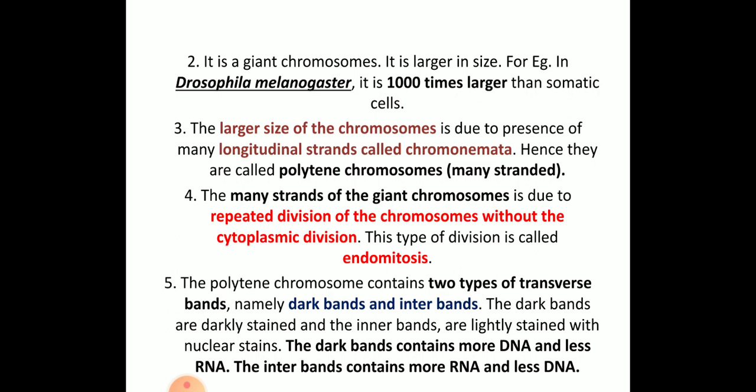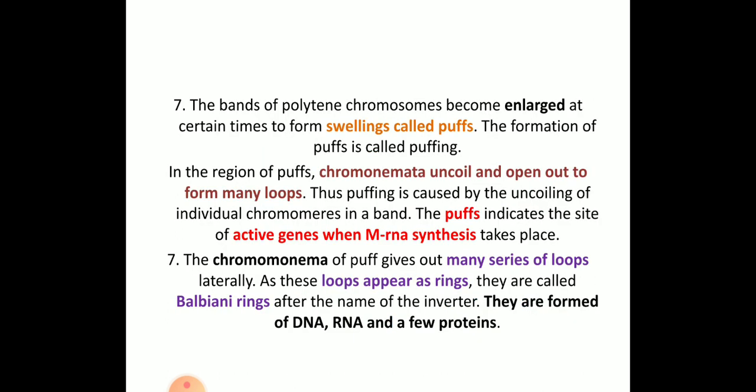Dark bands are darker in appearance, while inter-bands are less stained and not dark in nature. Dark bands contain more DNA and less RNA, whereas inter-bands contain more RNA and less DNA. There are some regions where enlargement or swelling takes place, called puffing, and the swollen region is called a puff.